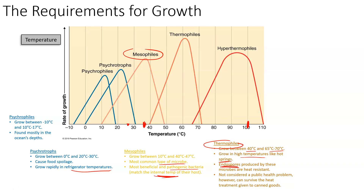Endospores, which we've talked about in previous chapters, are very heat resistant. Even if the bacteria die because the temperature rises too high, they can still produce these endospores, which will stay dormant and heat resistant until temperatures come back down into the optimal range, allowing them to proliferate at a really high rate. They are not considered a public health problem, but they can survive heat treatment given to canned goods, spoil food, and potentially produce toxins that can make the host sick, even though an active infection wouldn't exist.